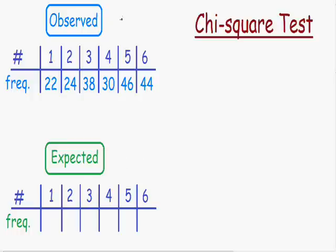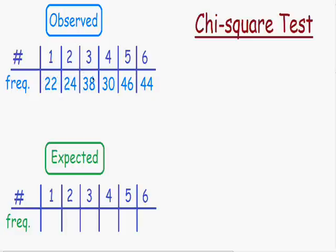Let's get started with this example. I chose to use the example of rolling a die. A man suspects a casino of using unfair dice, so he decides to record the outcomes of one die in particular. He records this die 204 times, and out of 204 times: a 1 is rolled 22 times, a 2 is rolled 24 times, a 3 is rolled 38 times, and so on. The total number of observations is 204.